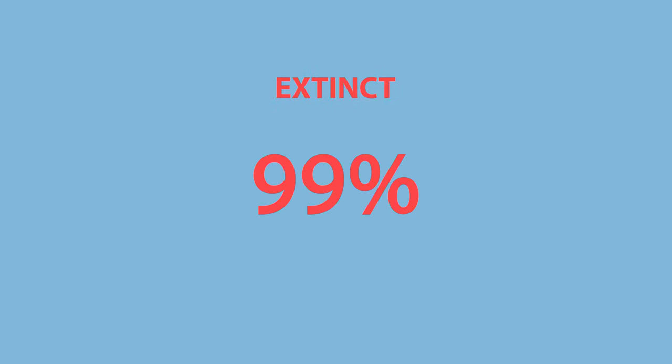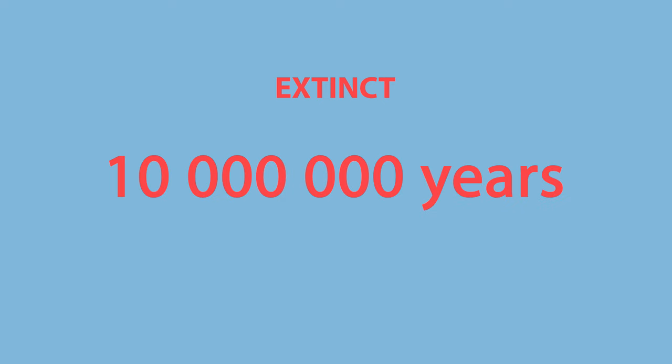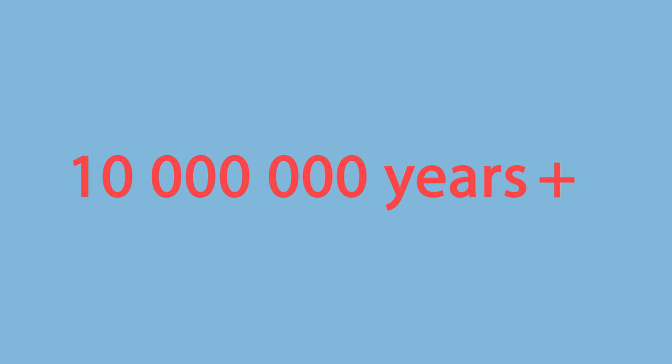It may surprise you to know that over 99% of all species that have ever lived are now extinct. Typically most organisms become extinct within 10 million years of their first appearance, although some species have survived without much change for much longer than this. These long-surviving organisms are sometimes called living fossils.